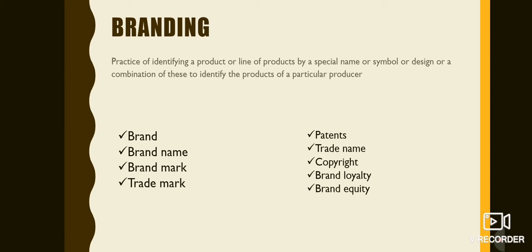For example, we use the SBI mark — State Bank of India. The 'M' is the McDonald's brand mark. It is a square or symbol. It is a circle with something — it is a design. These are examples of brand marks.